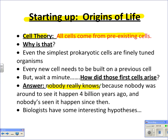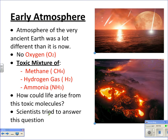Nobody really knows — we weren't there 4 billion years ago, and nobody's been able to see it happen since then. But we do have some hypotheses about that. I love these photos because they show how I envision the early Earth: it's hot, it's boiling, it's toxic, and there are meteorites everywhere. I really wish somebody could build me a time machine so I could go back 4 billion years ago and see how life first formed.